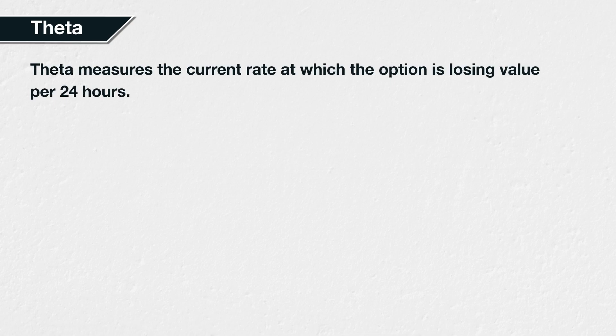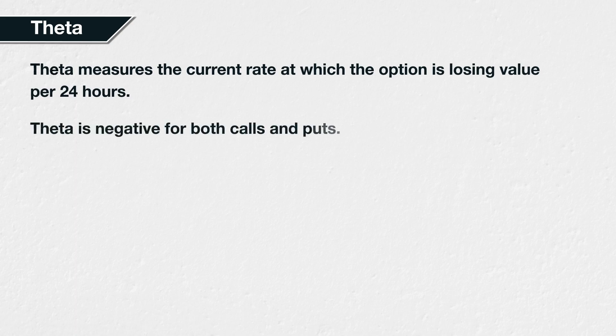Theta is a measure of the sensitivity of the option price to the passage of time, also known as time decay. More specifically, it is the current rate at which the option is expected to lose value over 24 hours. Theta is negative for both call and put option buyers, because all other things being equal, an option will lose extrinsic value as time passes. For option sellers, theta is positive, because the option losing value results in a profit for the sellers.